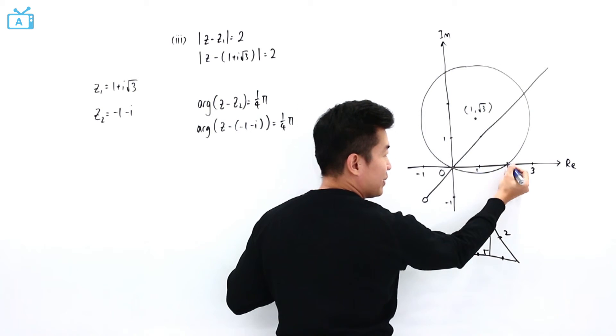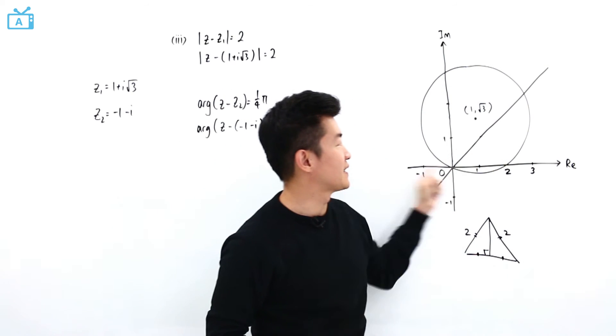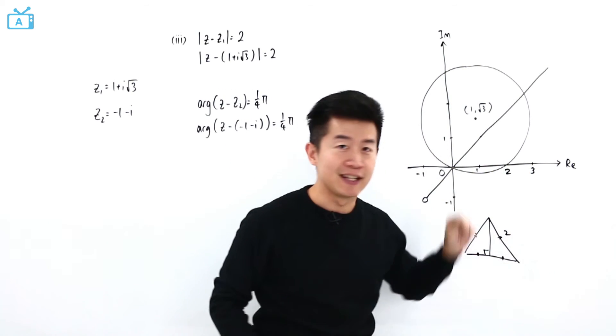So from here, 1 and 1, that makes this point here 2. And that is why the point where the circle cuts the positive real axis is at 2.